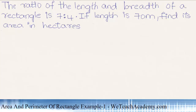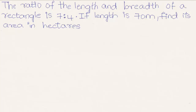Hey guys, welcome to VTeach Academy. In this presentation we are going to solve a few examples on area and perimeter of a rectangle. The given example is: the ratio of length and breadth of a rectangle is 7 is to 4, and if the length is 70 meters, then find the area in hectares.